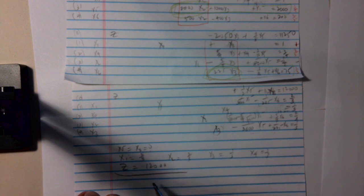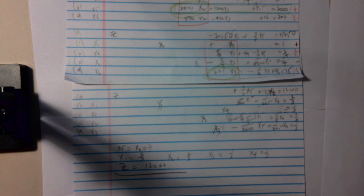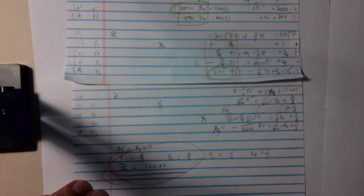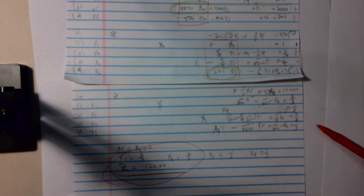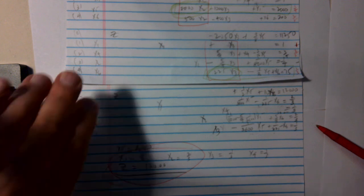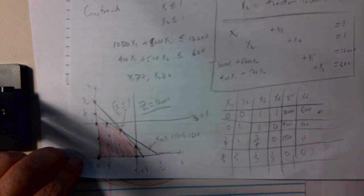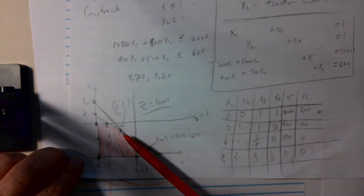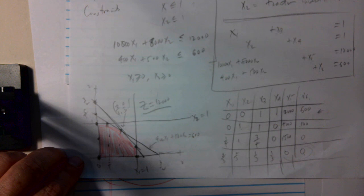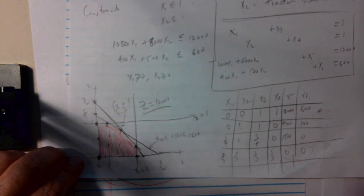So, we have solved the problem. X1 is two-thirds, X2 is two-thirds, and our maximum profit is 12,000, which is exactly what we got when we solved the problem graphically. Two-thirds, two-thirds was the maximum, that was the corner point feasible solution that was optimal, and the maximum profit was 12,000.